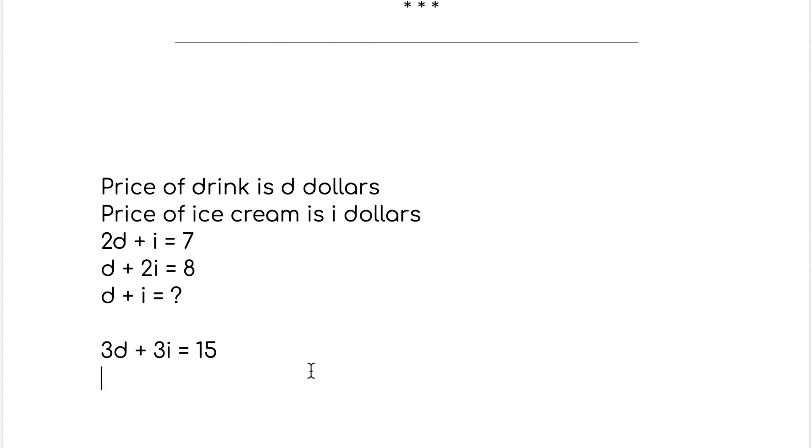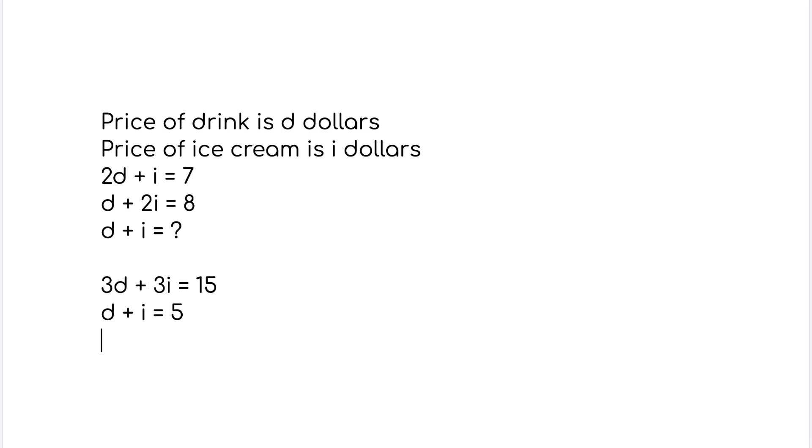So now this bit here is exactly triple of what we want. So all we have to do now is just divide this by 3. So if we divide this by 3, it's going to become 3 divided by 3 is D. And then 3I divided by 3 is I. And then 15 divided by 3 is 5. So that means D plus I is 5. So what Mario bought costs $5. So the answer is 5.